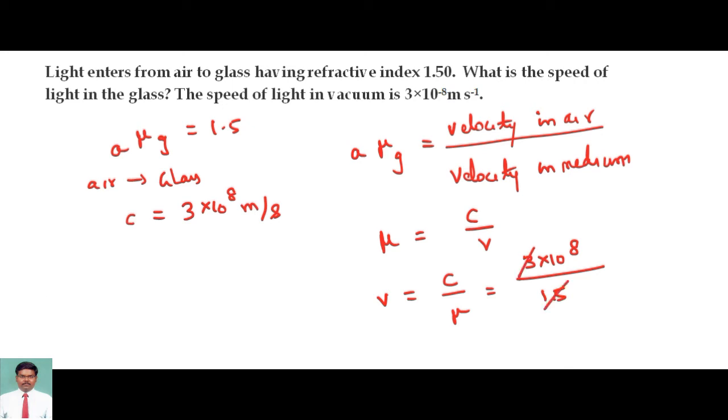If I cancel this, it will be twice, so 2 into 10 power 8 meter per second. So the velocity of light in medium is 2 into 10 power 8 meter per second.